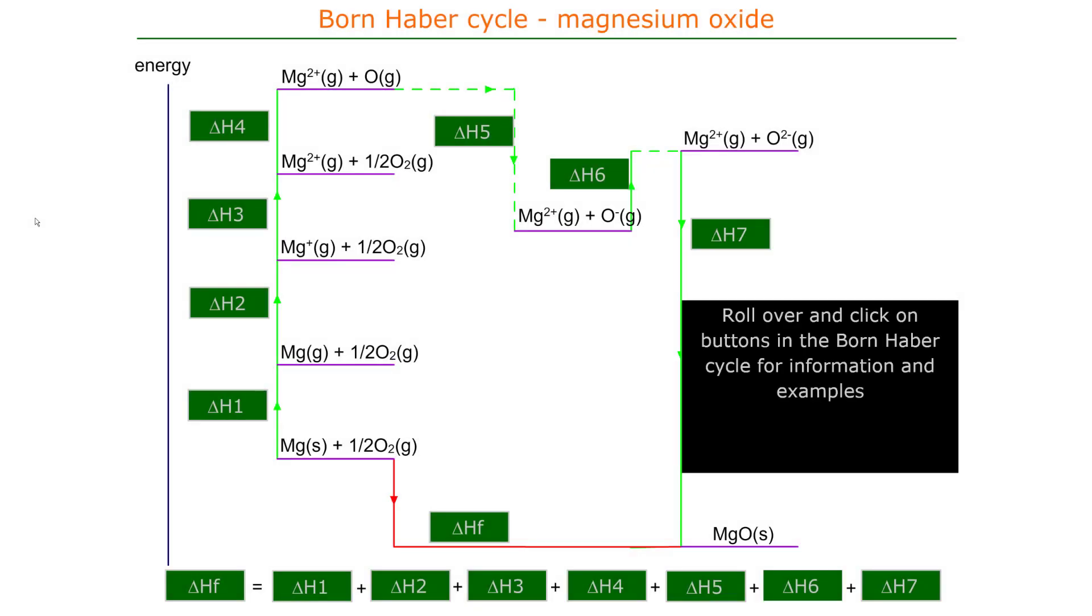The Born-Haber cycle for magnesium oxide can be constructed for any ionic compound. The full cycle is shown here. We start with magnesium plus half oxygen molecules, the required elements for MgO.